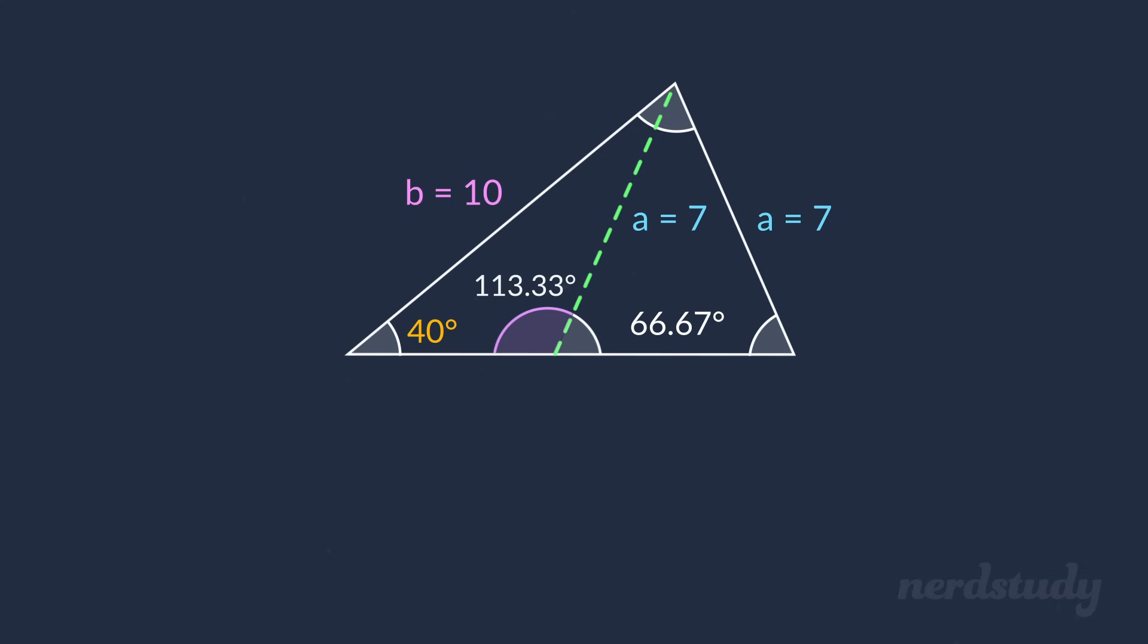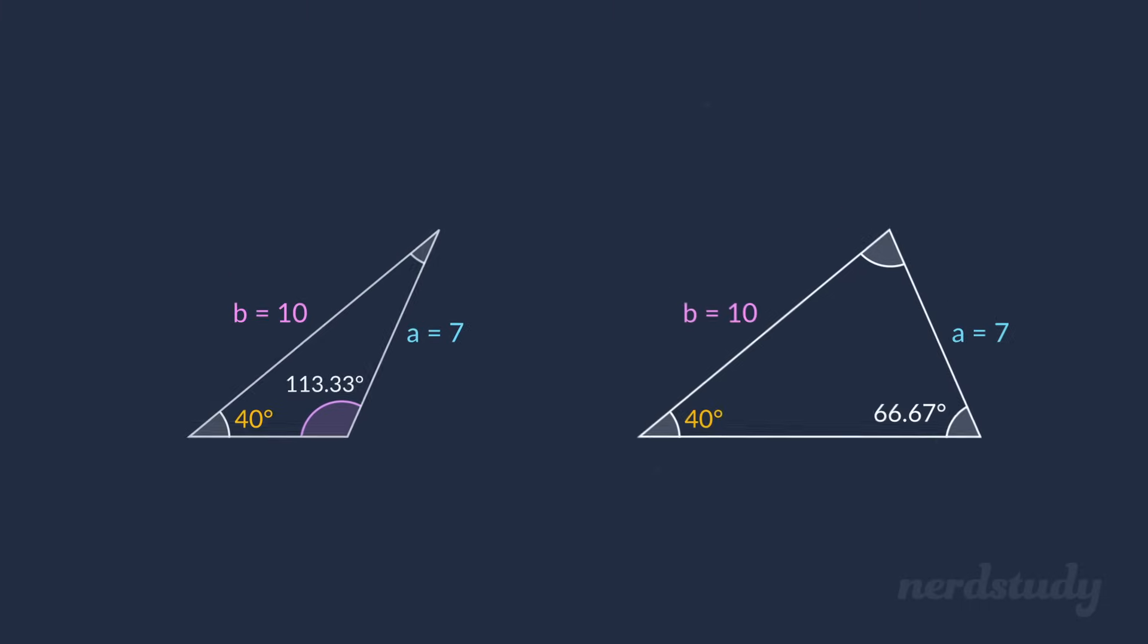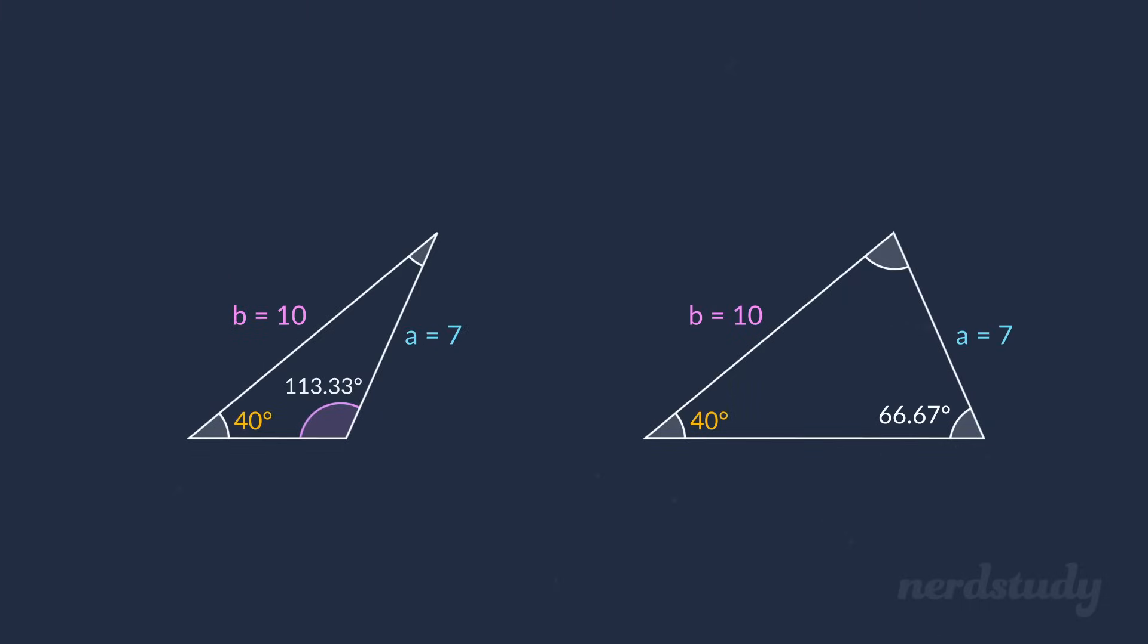Again, if these two angles added together are less than 180 degrees, then we can confirm for a fact that we have ourselves another triangle. And we can tell right away that these two do not add up to 180 degrees. So it seems to us that we have ourselves that second case, with angle B as either 113.33 degrees or 66.67 degrees.